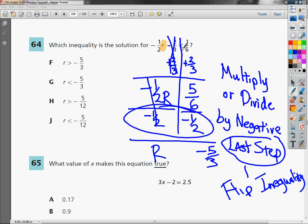So what used to look like it did before, now it looks like R is greater than negative five-thirds. So the answer to number 64 is F. But if you can get that part worked out, you are ready to roll.